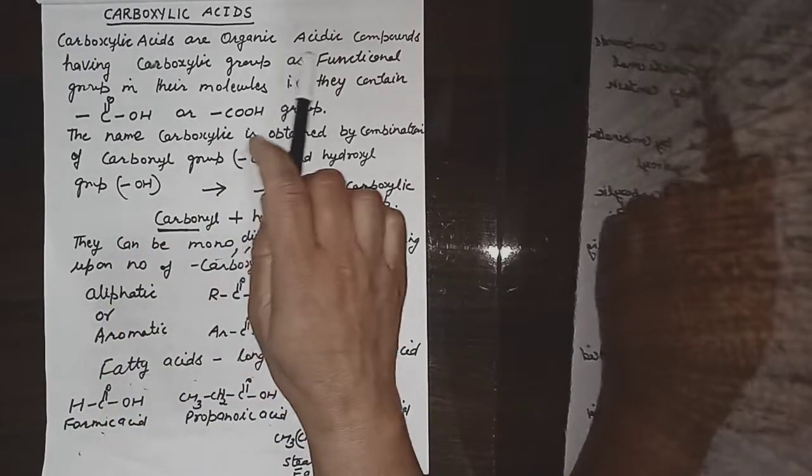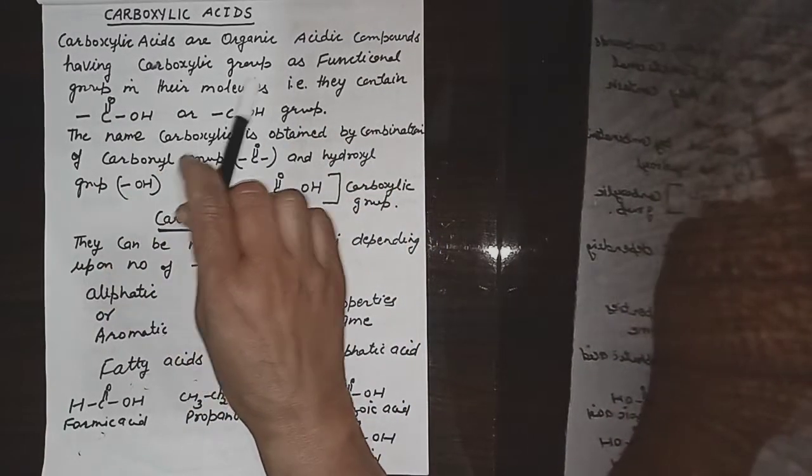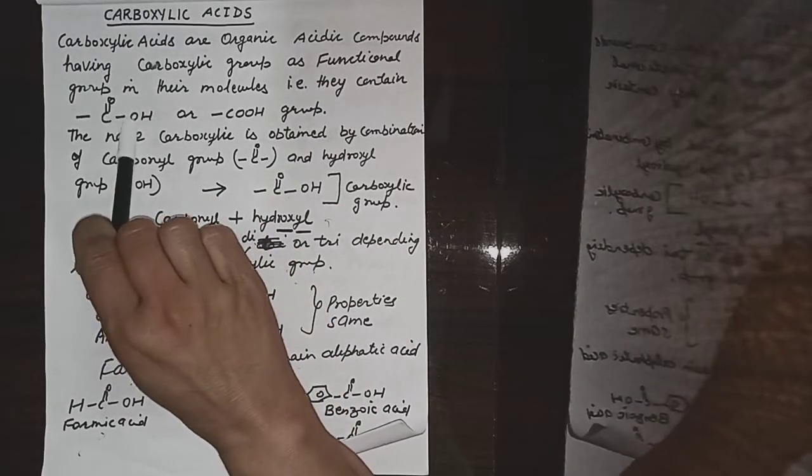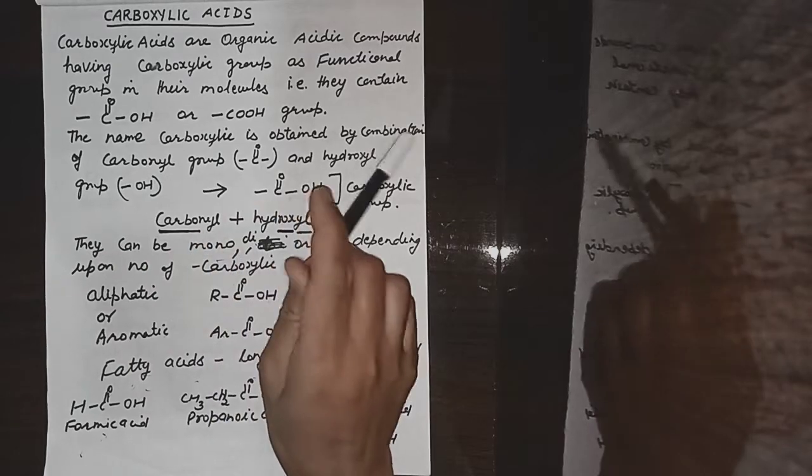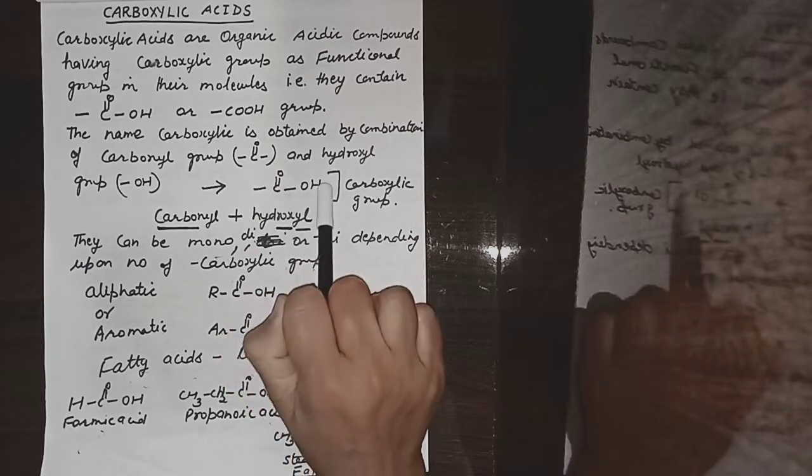We are starting with carboxylic acids, which you have studied in Plus 1 and Plus 2. Carboxylic acids are organic compounds having a carboxylic group as a functional group in their molecules. They contain the carboxylic group, that is C double bond O-OH, or written as COOH. The name 'carboxylic' is obtained by combination of the carbonyl group and the hydroxyl group, and that is why it contains two functional groups joined together.